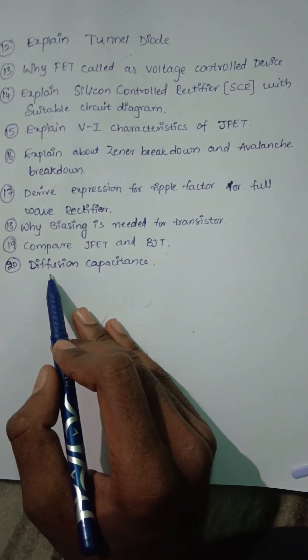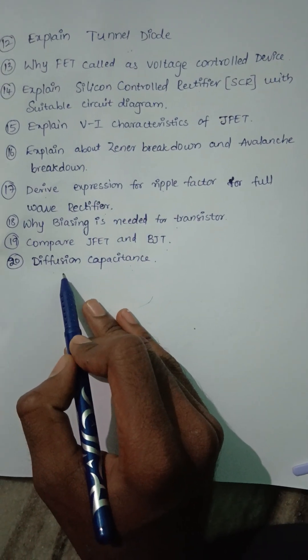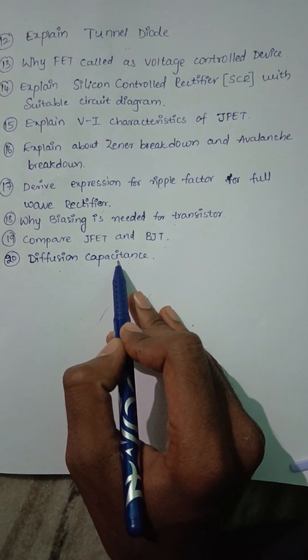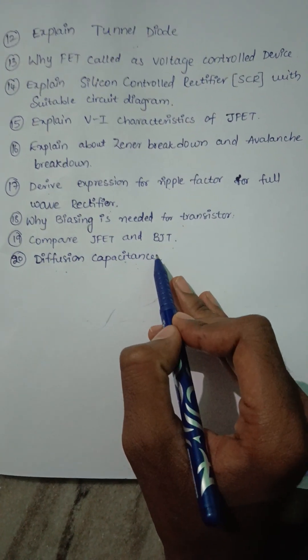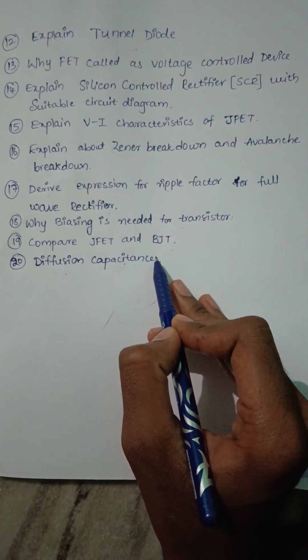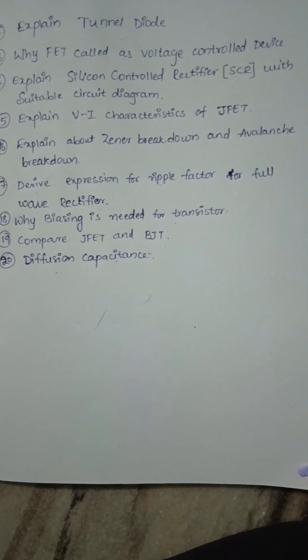The last question is define diffusion capacity. It may be asked for short answers. The 18th, 19th, and 20th questions may be asked as short questions or long questions. Thank you, subscribe to our channel.